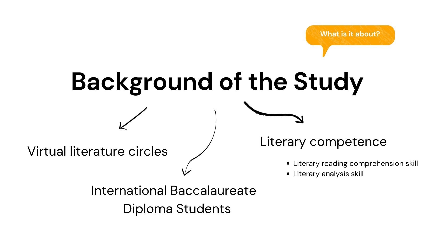The background of this study is as follows. It involves using virtual literature circles, aiming at addressing a student's literary competence, which is divided into two components: literary reading comprehension skills and literary analysis skills. The students used for this research are the International Baccalaureate Diploma students.